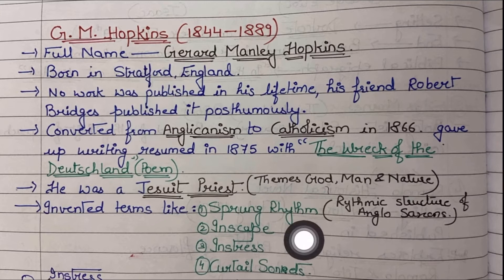G.M. Hopkins invented many terms: sprung rhythm, inscape, instress, and curtal sonnets. You have to keep these four terms in mind — these are the key terms associated with G.M. Hopkins.